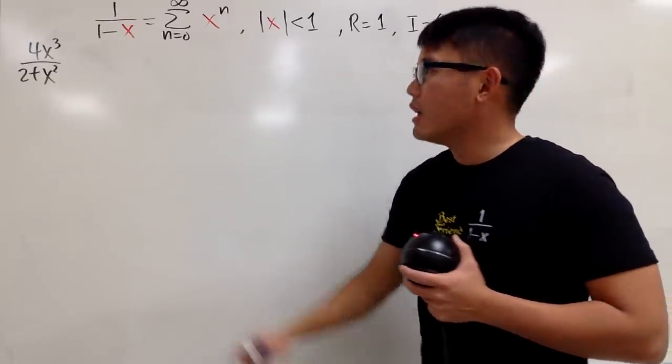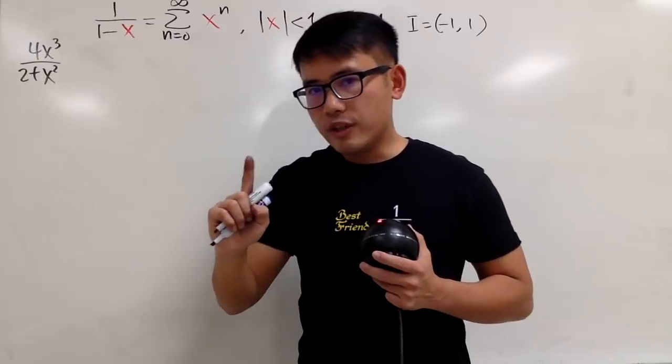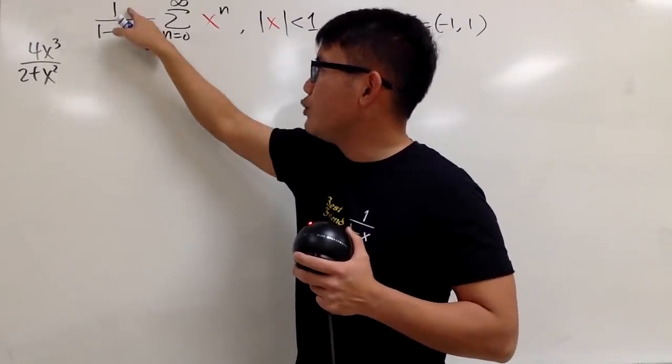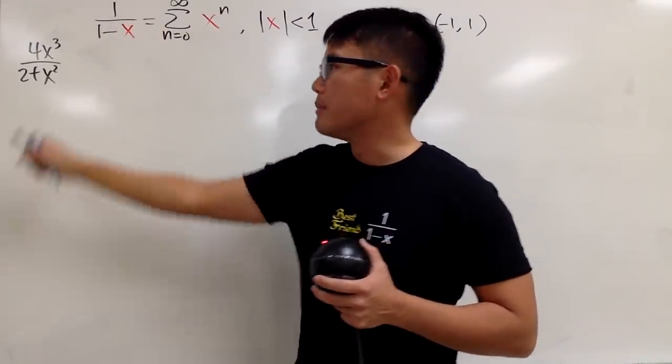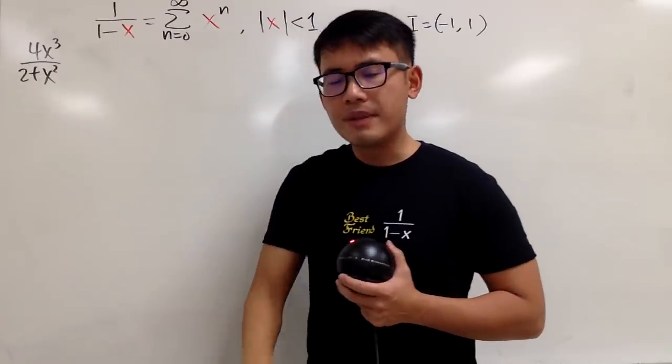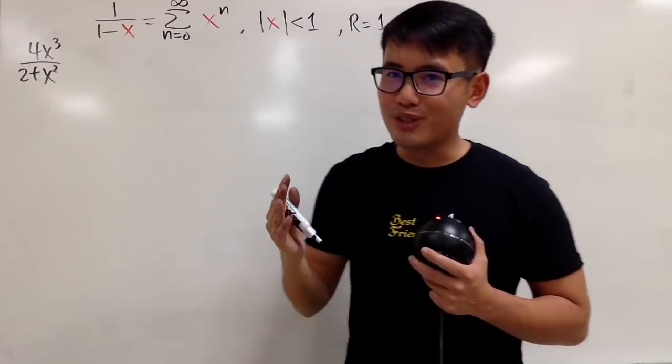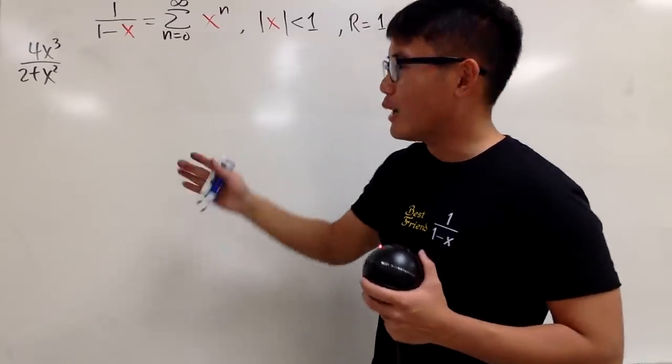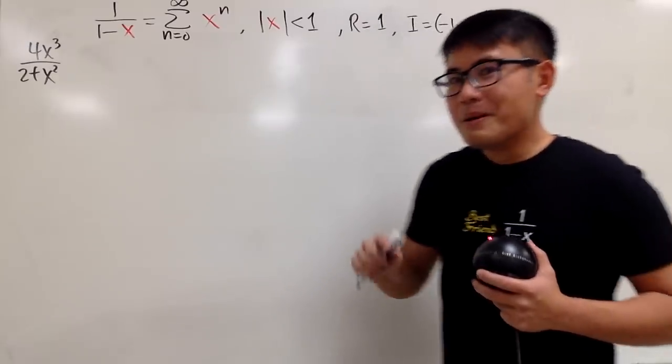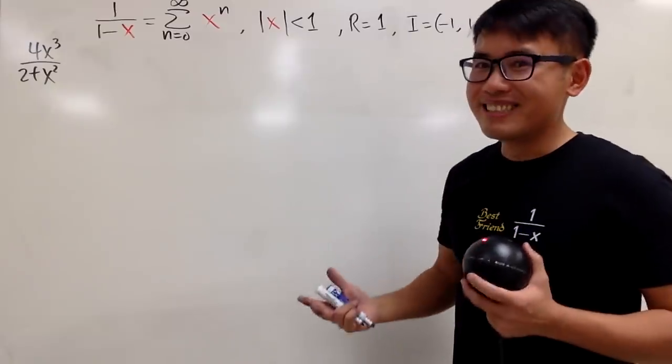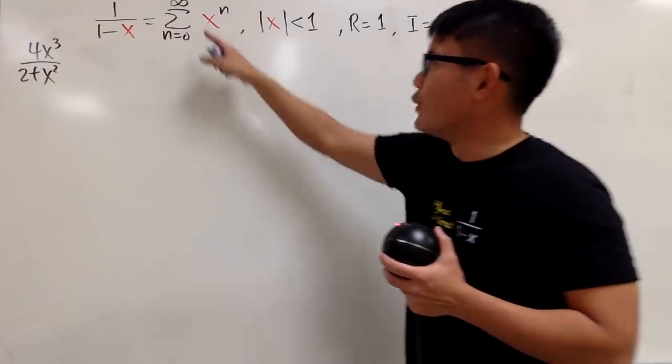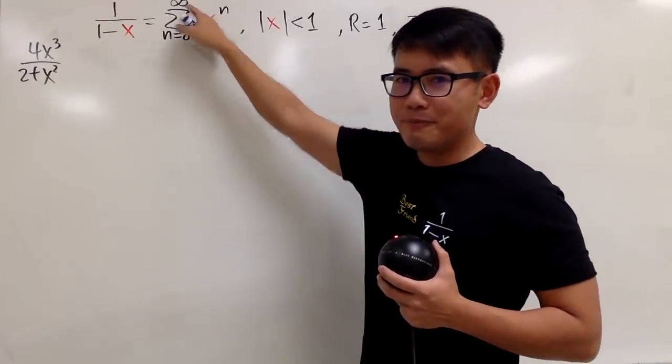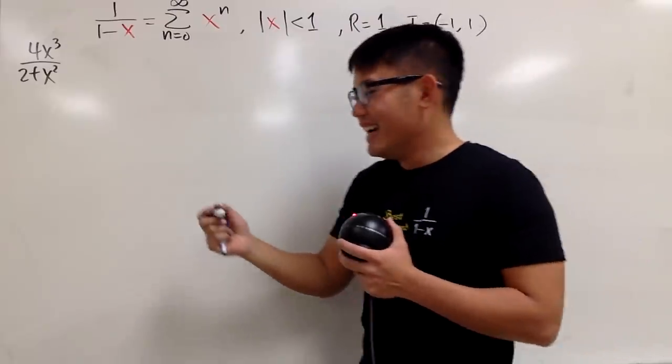Now, here we go. First, in order for us to use our best friend, I need to have the 1 on the top. But this right here is 4x to the third power. It's okay, don't worry, because we can just do some algebra for this. Yes, you heard me right. We will just be doing algebra right here. Perhaps the most calculus thing that we do in this video is to write down the infinity symbol. That's it, I'm serious. Anyway, here we go.